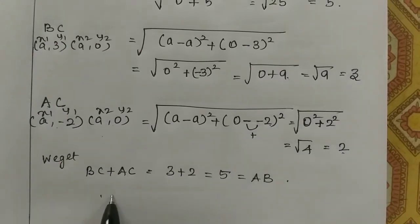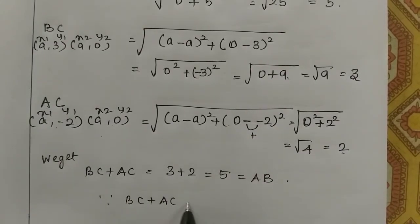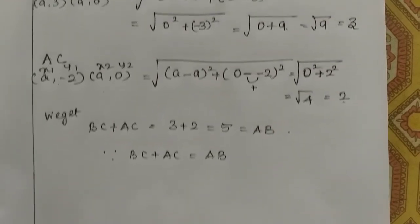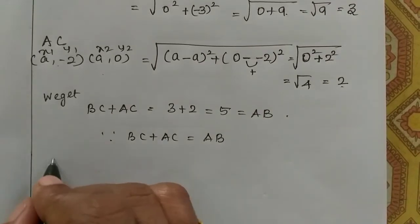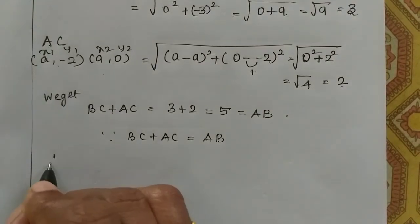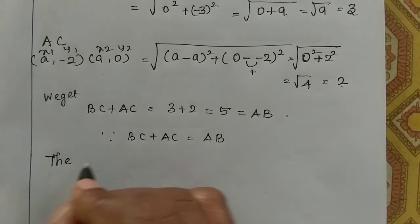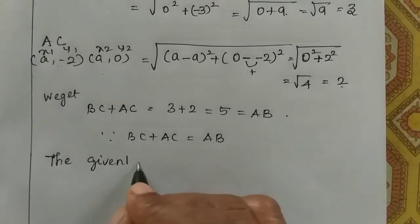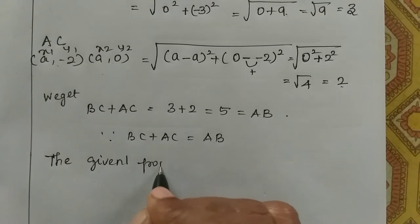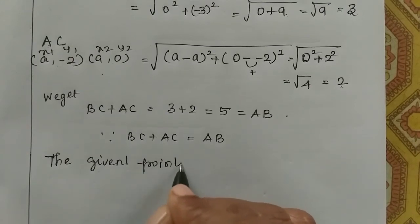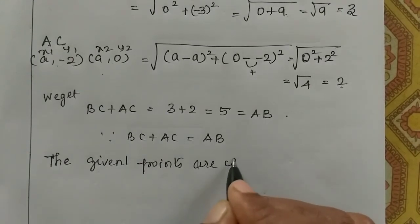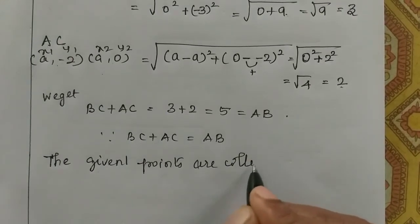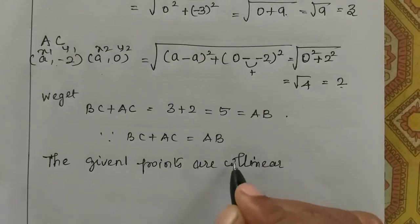Since BC plus AC equals AB - that is 3 plus 2 equals 5 - the given points are collinear. That's all.